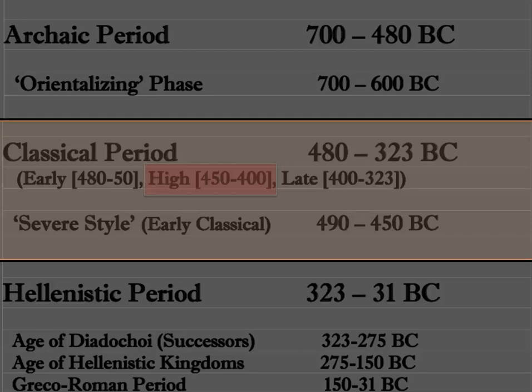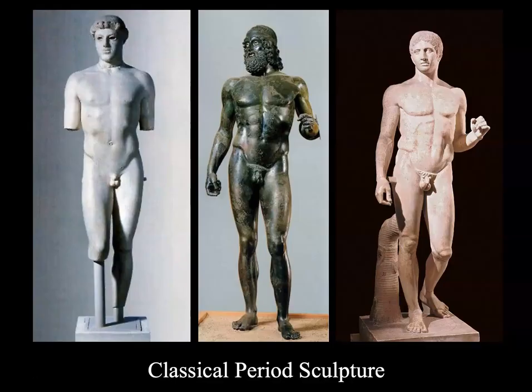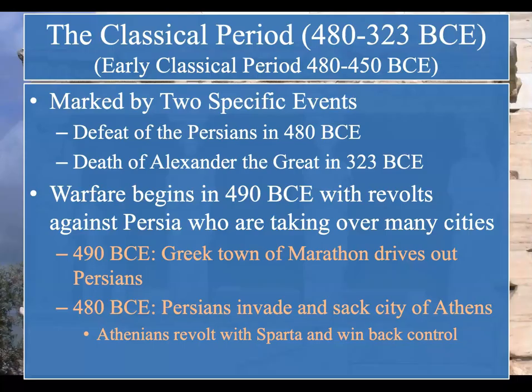The classical period runs from 480 to 323 BCE. We went over some of this with classical sculpture a few weeks ago. The classical period is marked by two specific events: the defeat of the Persians in 480 BCE, and at the other end, the death of Alexander the Great in 323 BCE. I'll first give an overview of the early classical period, which goes until 450.